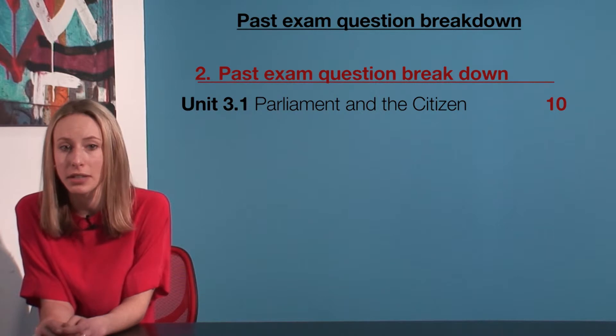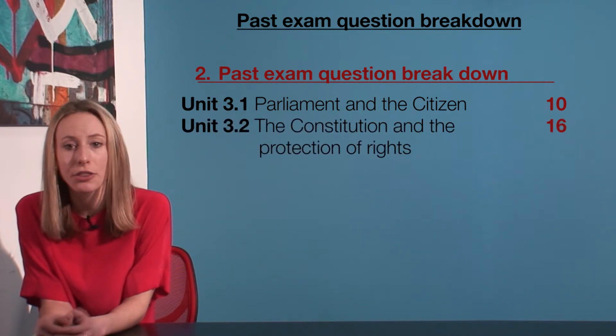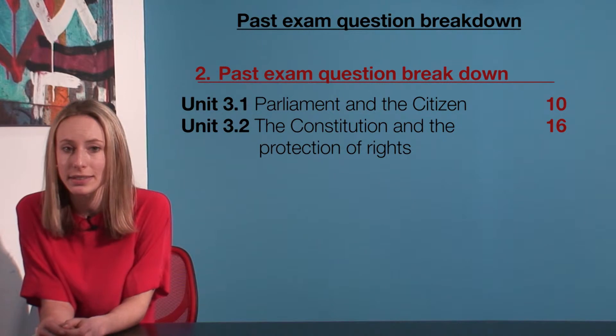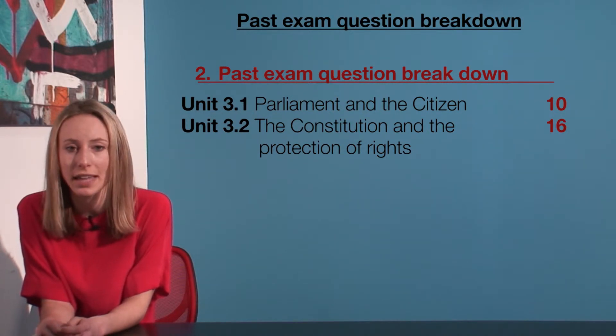In Unit 3, Area of Study 1, which is called Parliament and the Citizen, there's been an average of 10 marks per exam. Unit 3, Area of Study 2, The Constitution and the Protection of Rights, has averaged 16 marks worth of questions per exam.